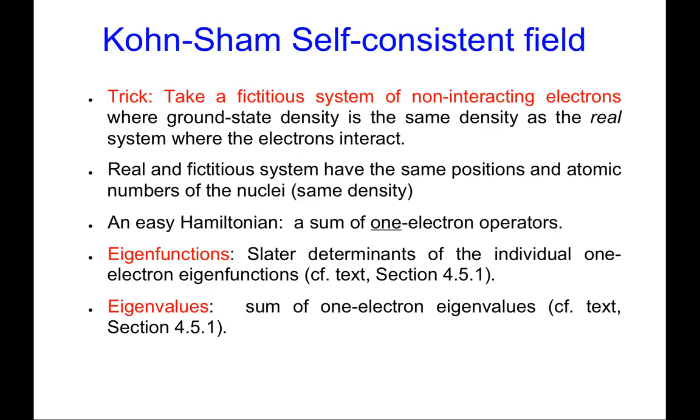The Kohn-Sham self-consistent field approach was what broke the problem of finding trial densities and determining energies from trial densities. Kohn-Sham proposed a novel trick, effectively. What they said was, imagine that you have a fictitious system - you can tell they're physicists because they started from a fictitious system - take a fictitious system of non-interacting electrons.